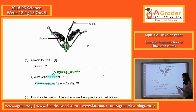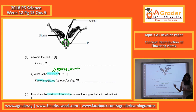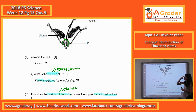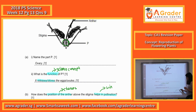We'll go to question 16. How does the position of the anther above the stigma help in pollination? Based on the diagram here, the anthers are above the stigma. So anything where the anther is higher than the stigma means it's pollinated by wind.